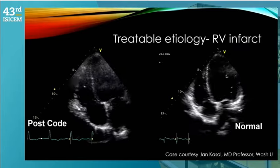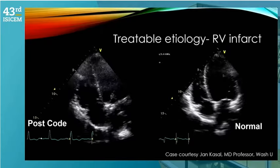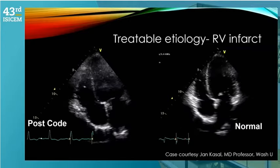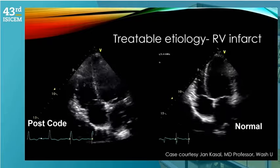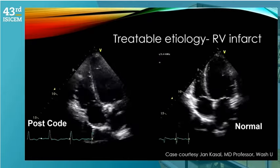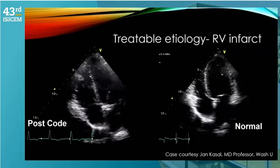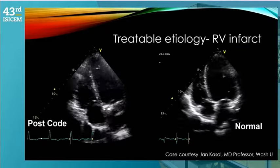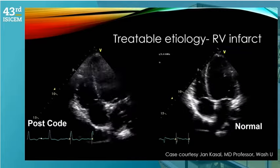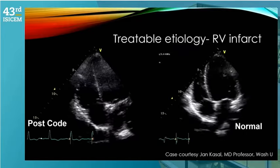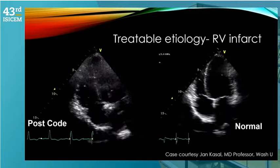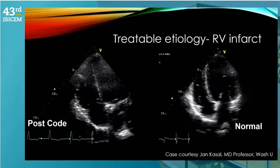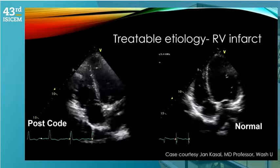Another treatable cause is acute MI. This was a post-cardiac bypass surgery patient who had an uneventful perioperative course, was extubated, then suffered a cardiac arrest on day two. On the right you can see a normal apical four-chamber with very nice RV movement, while on the left the RV is barely contracting, although the LV is fine. The cause of shock was complete RV failure. The diagnosis of acute right RCA infarct was made by EKG as well. Rather than waiting for troponins, knowing the patient's pre-op normal echo and the regional wall motion abnormalities associated with RV infarct, the patient went to the cath lab where an RCA dissection was found.